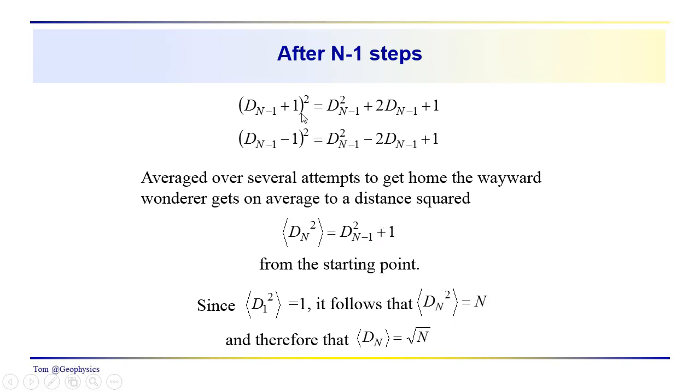We have these two possible outcomes. We're going to take the average of these two. The average turns out to be: the average of the distance squared traveled after N steps is d sub N minus 1 squared plus 1 from the starting point.